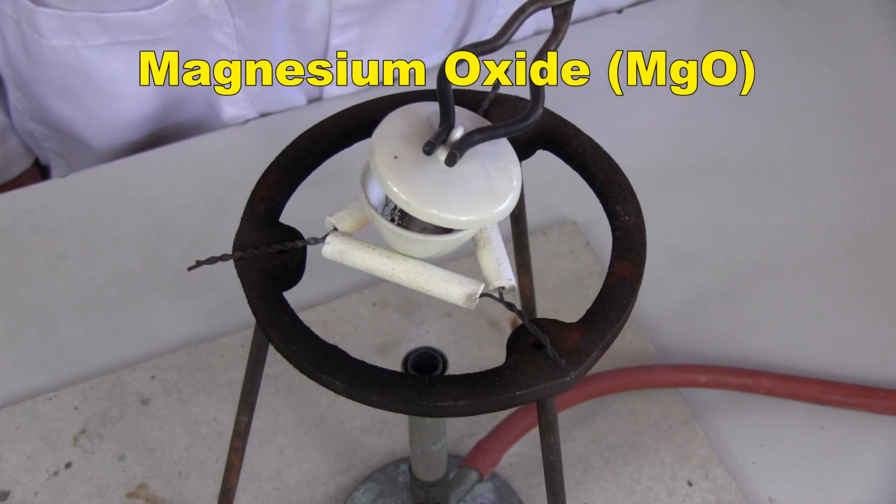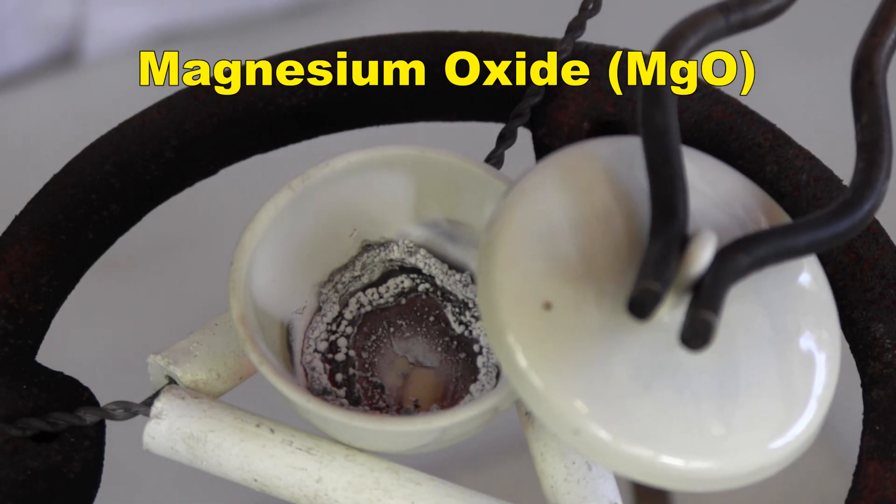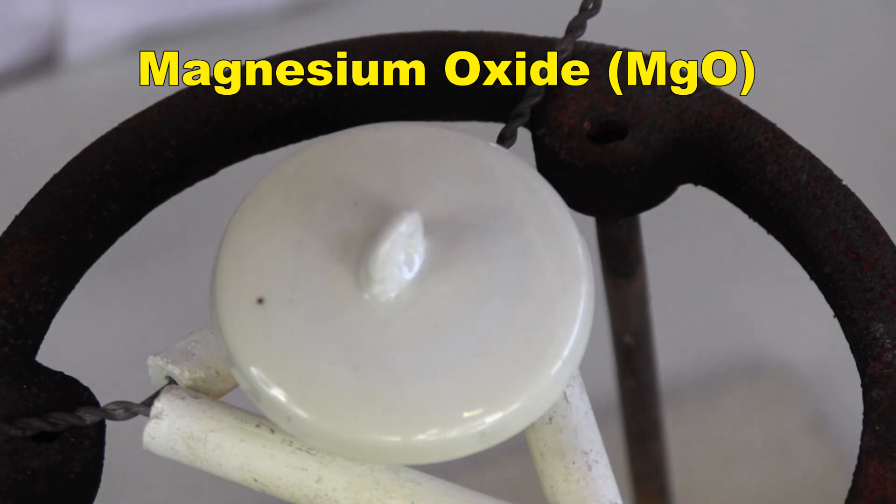In this video, I'm going to explain how to make magnesium oxide in a way that allows you to analyze the ratio that magnesium and oxygen combine in to produce it.